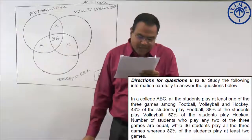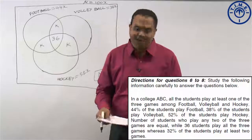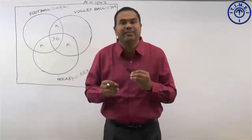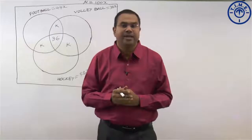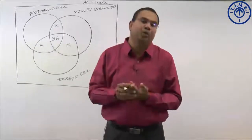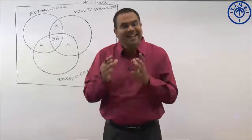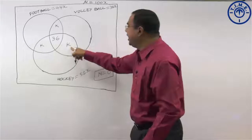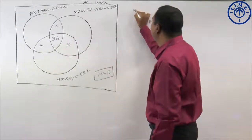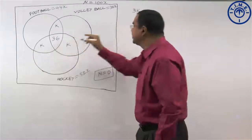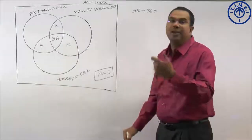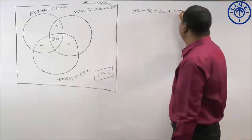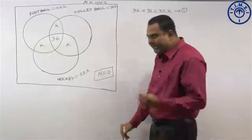32 percent of the students play at least two games. At least two games means two or more games — exactly two games plus all three games. Exactly two games is K plus K plus K, that is 3K, plus all three games which is 36, equals 32 percent of total students, which is 32X. Let us take this as equation 1.